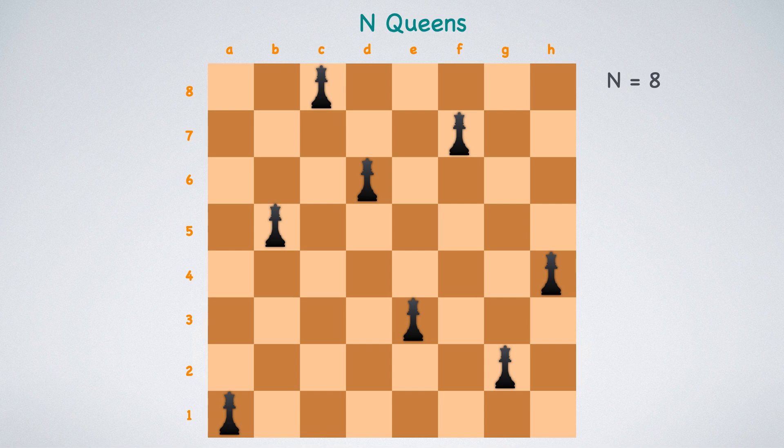This is one solution to the problem. If you observe closely, none of the queens are threatening each other. Or, this could be another arrangement and solution to the problem. Essentially, there could be more than one solution to this problem and we have to arrive at a solution.